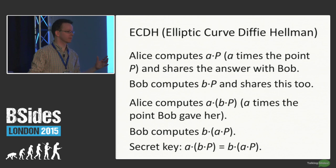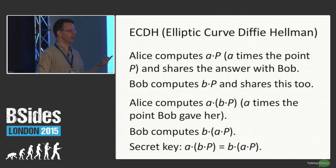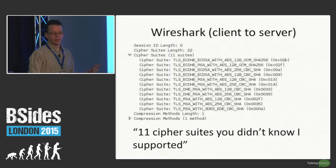They have agreed on a shared secret number, and the discrete logarithm problem means that no one can recover it — even if they know what curve is used, if they know point P, if they have seen A times P and B times P.